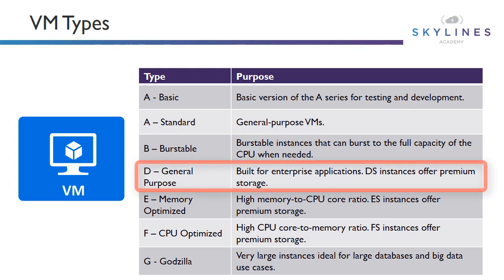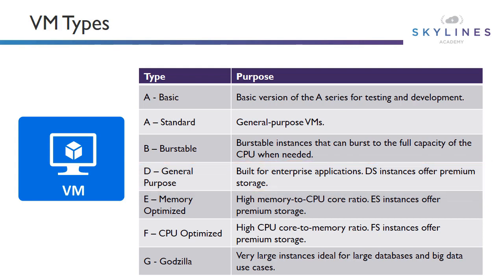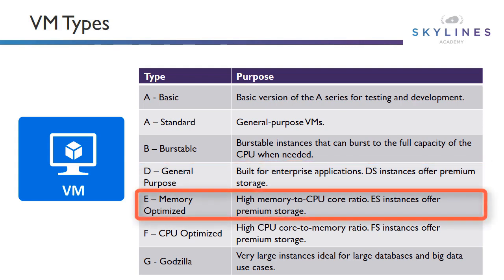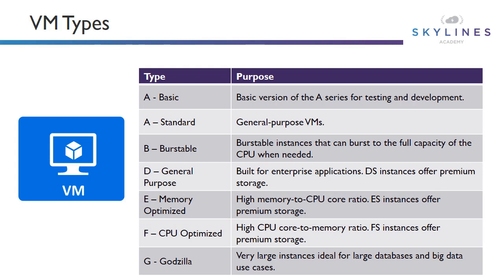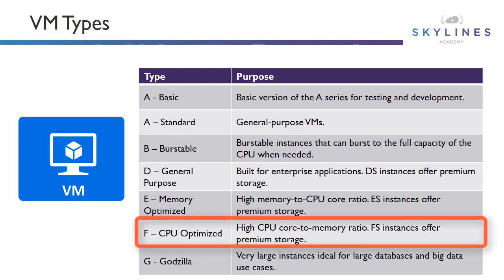D is the general-purpose series — you'll see a lot of these in the enterprise. Then we have memory-optimized: these are the E series, which is the newest memory-optimized series brought out recently. This is a high memory-to-CPU core ratio. Then we go into the F series, which is CPU-optimized — the reverse, with a high CPU core-to-memory ratio. It's kind of the opposite of the E series.